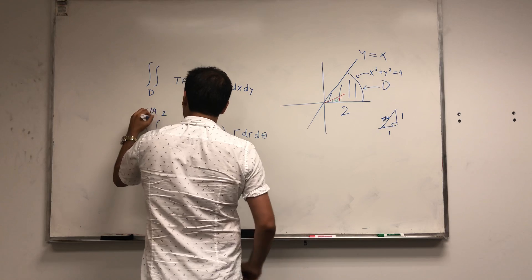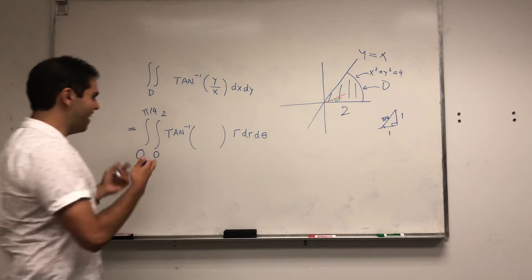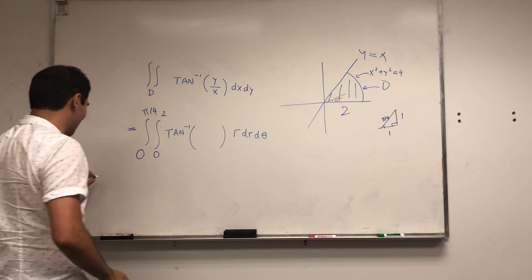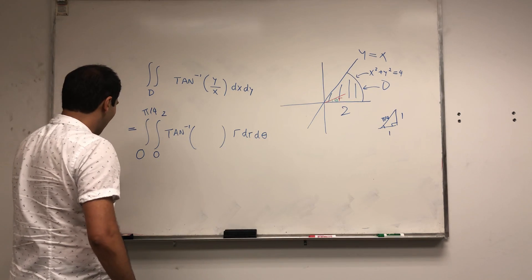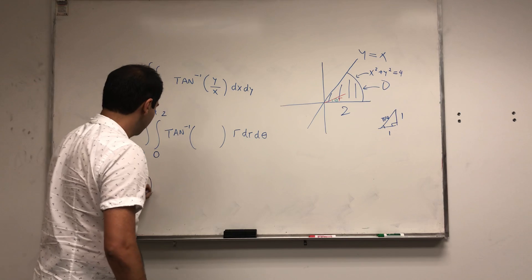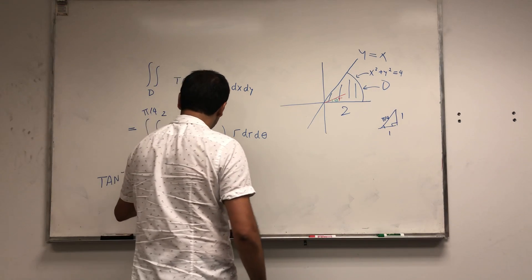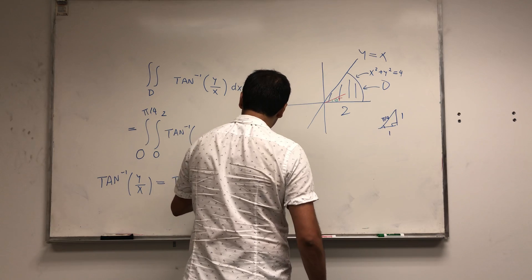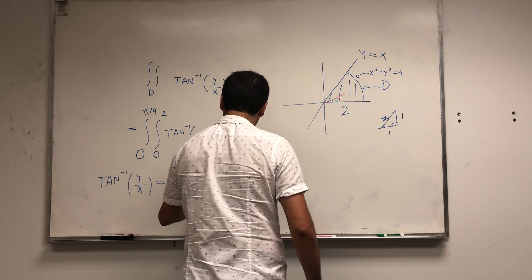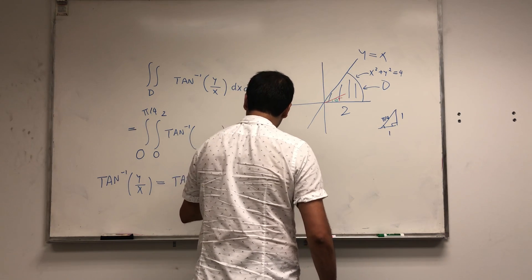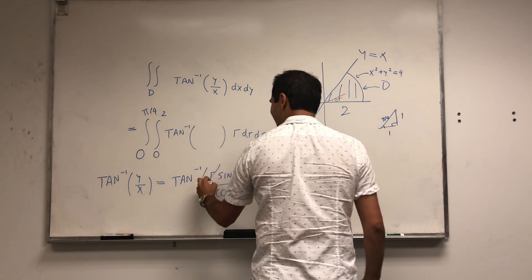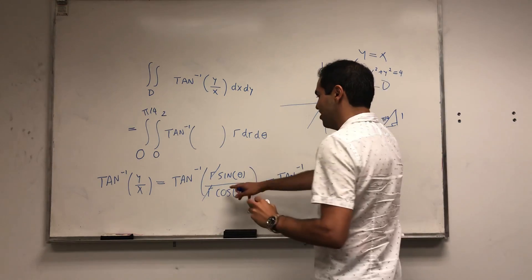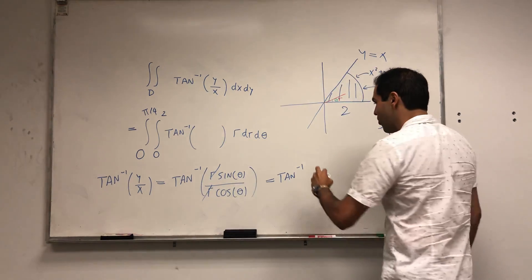So it's 0 to pi over 4. And now let's figure out the arctangent thing, and you'll see it becomes very beautiful. So arctangent of y over x is arctangent where y is r sine theta and x is r cosine theta. The r's magically cancel out and you get arctangent of sine theta over cosine theta.